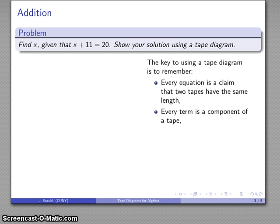And the expression I have here, well, every term is then going to be some component of the tape. So here I have two terms, x and 11. And the tape itself is going to be the result of the arithmetic operations in the expression that I have. So here I have some arithmetic operation that gives me a tape corresponding to x plus 11. I have a tape that has length 20.